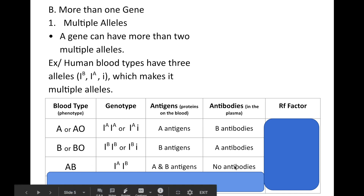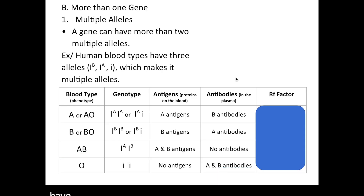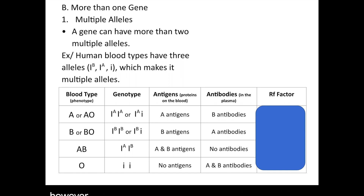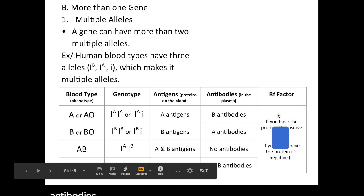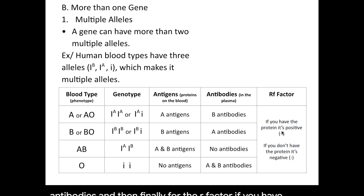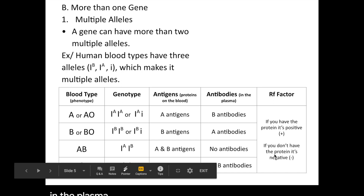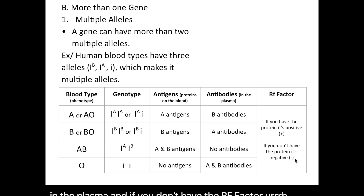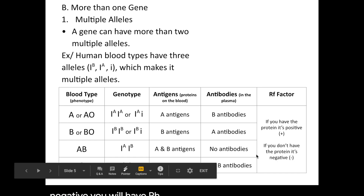AB blood patients do not have antibodies in the plasma, so when they donate blood, the plasma is very useful and can be extracted because it has no antibodies, which is helpful for cancer patients. For blood type O, you must have two recessive lowercase i alleles, meaning none of the blood cells have any antigens, but the plasma will have both A and B antibodies. Finally, for the Rh factor, if you have the protein you are Rh positive with no Rh antibodies in the plasma, and if you don't have the Rh factor you are Rh negative and will have Rh antibodies in the plasma.